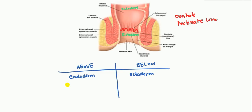The type of cells are different as well. Above the pectinate line you have columnar cells, and below the pectinate line you have squamous cells. As a side note, this links into cancer pathology — above the pectinate line you get adenocarcinomas, and below the pectinate line you get squamous carcinomas, because of the histology.